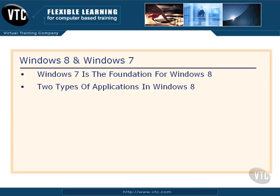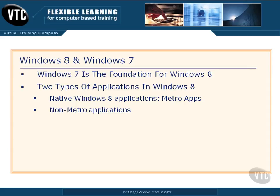There are two types of applications in Windows 8. One you've never seen before — and it's the one scaring people — and that is native Windows 8 applications, called Metro apps or Metro applications. Then you have non-Metro applications: the things we've been using all along that run on the desktop in the old Windows 7-type environment — Windows 7, Vista, XP, and so forth.